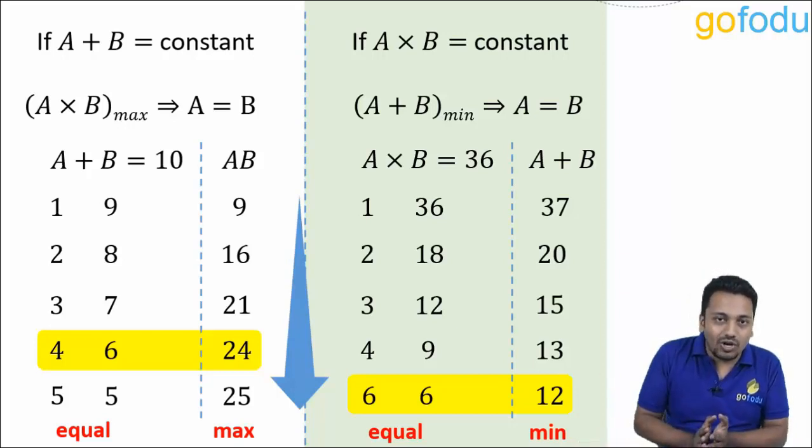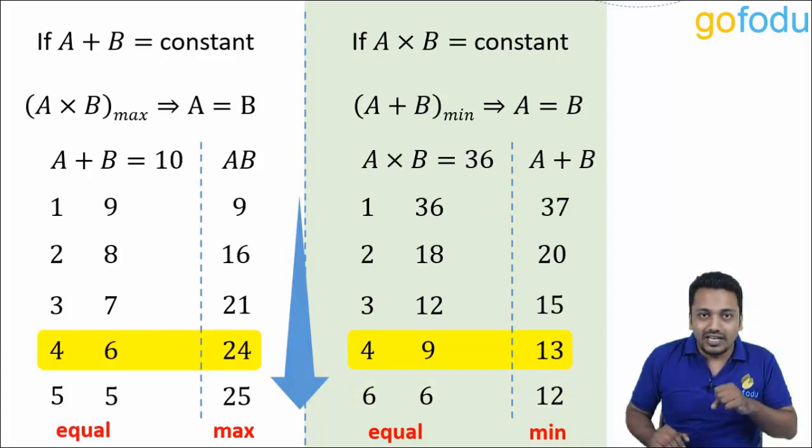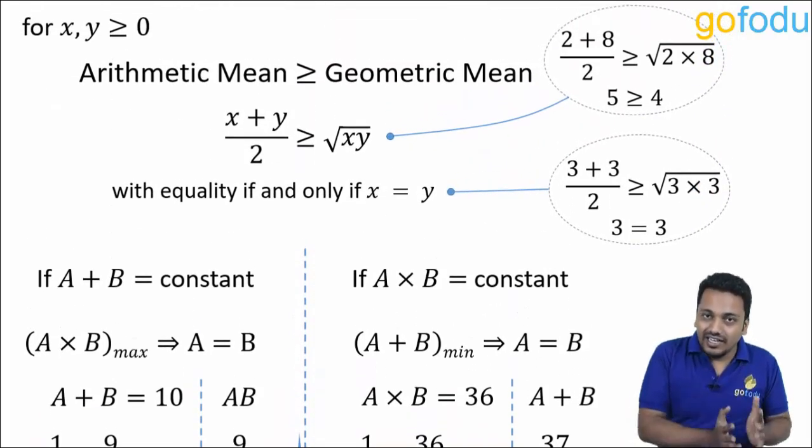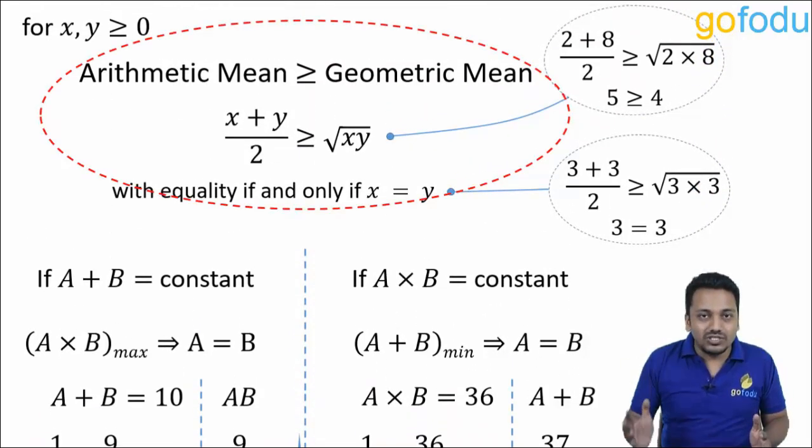Also the next minimum will occur when they are as close as possible, when A is 4 and B is 9. We won't be using these observations for solving questions as we'll be using the very basic thing that we started with. AM is greater than or equal to GM.